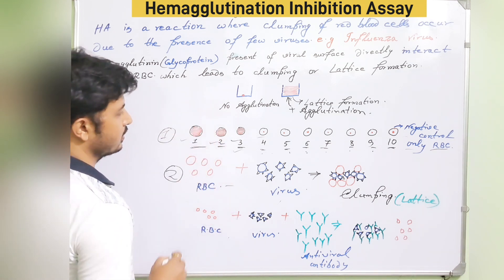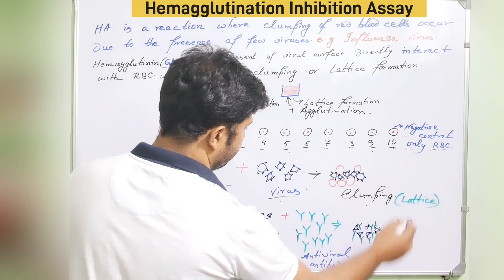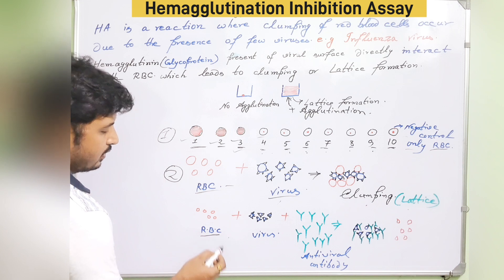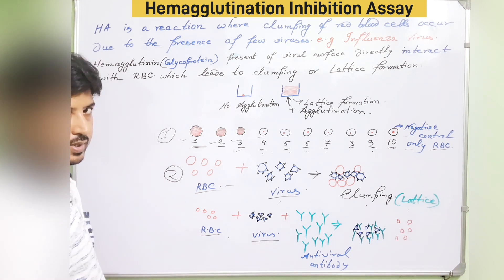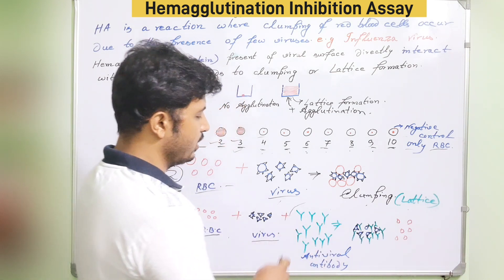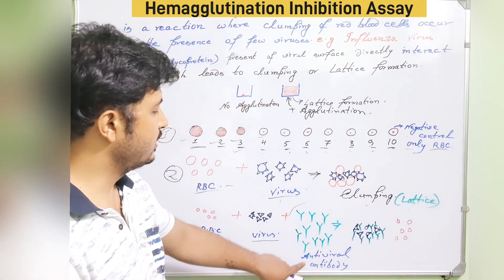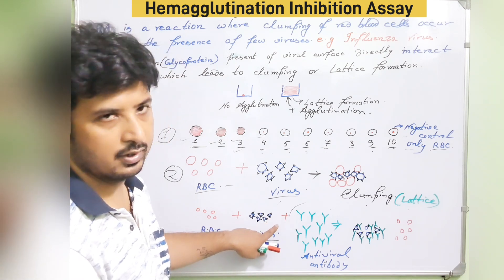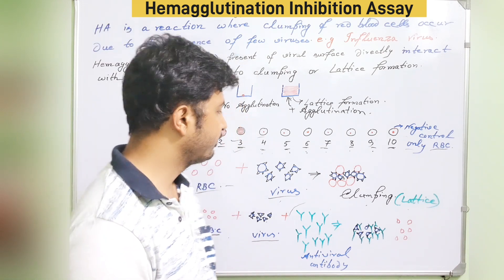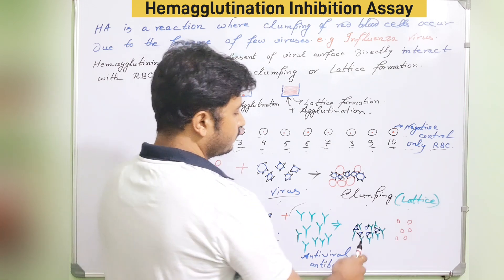Now let's understand hemagglutination inhibition. In this case, RBCs are present, the virus contains hemagglutinin, and the patient's serum contains antiviral antibodies generated against that virus. When these three components are added to a single well with serially diluted serum, the antibody recognizes and binds to the virus.